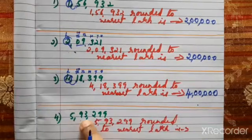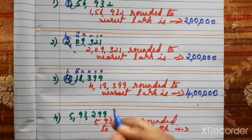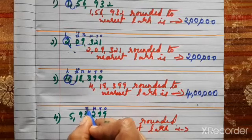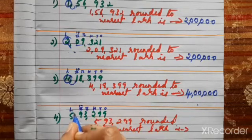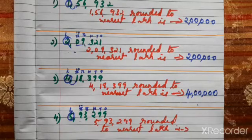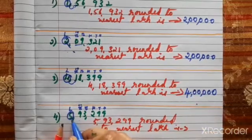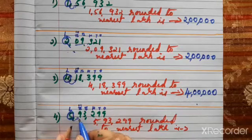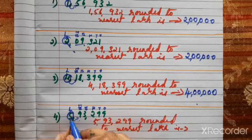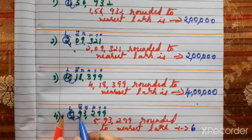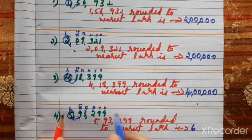Fourth question: 5,93,299. We have to round off in the lakhs place. First step, check the place value: ones, tens, hundreds, thousands, ten-thousands, lakhs — 5 is in the lakhs place. Knock the door and ask: do you have 5 rupees or more than 5? The neighbor is 9 — a rich person who can help. So 1 is added, and 5 becomes 6.